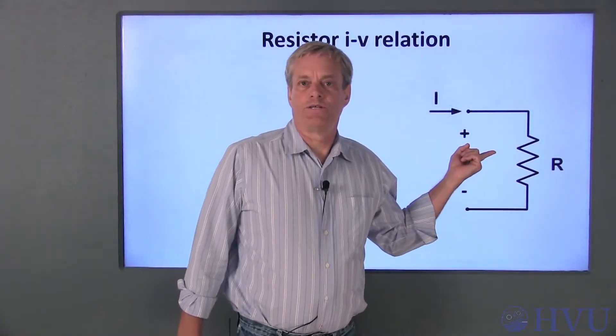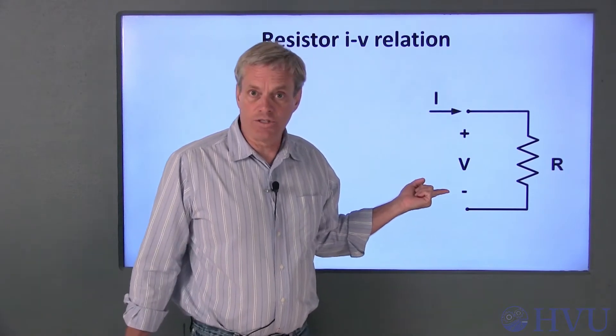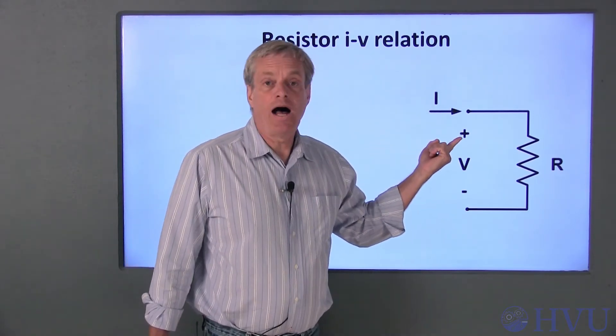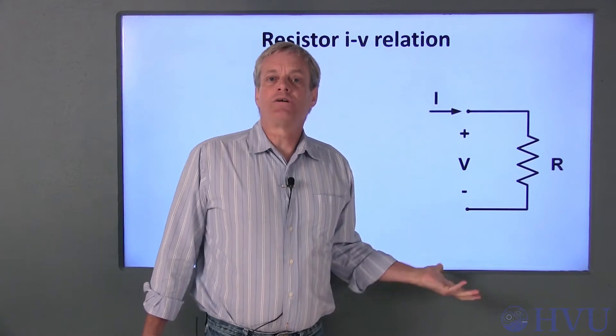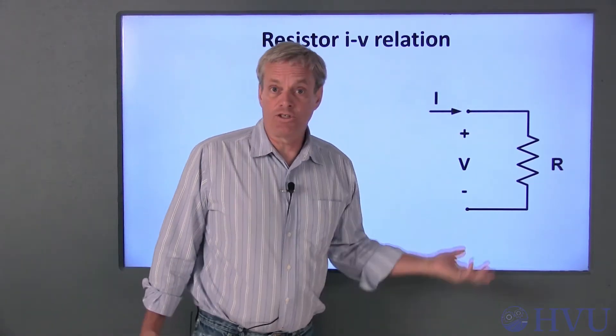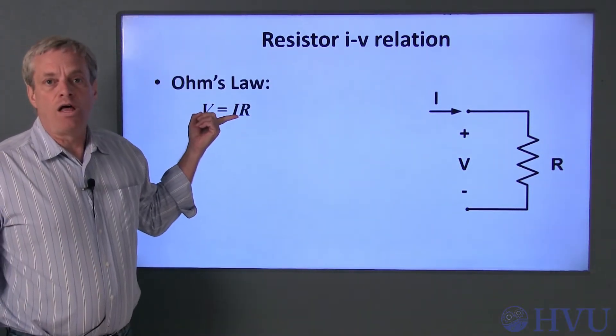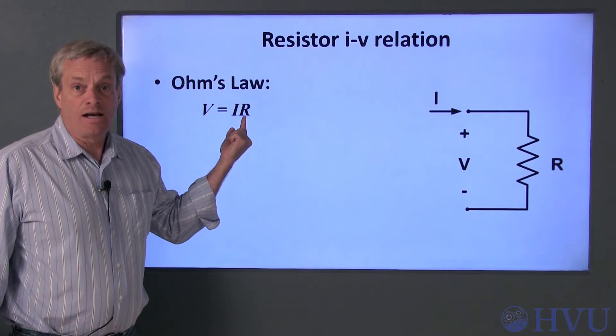This is the symbol for a resistor. Resistors can have some voltage difference, V, across their terminals, and a current I entering the positive voltage terminal. Circuit elements are described by the relationship between voltage and current at their terminals. For resistors, this relationship is Ohm's law: voltage is equal to current times resistance, V equals IR.